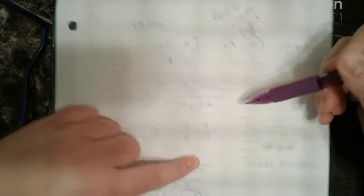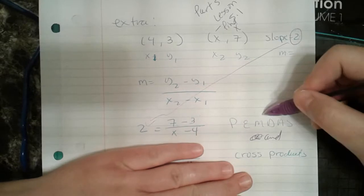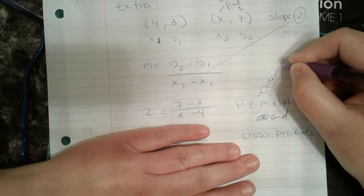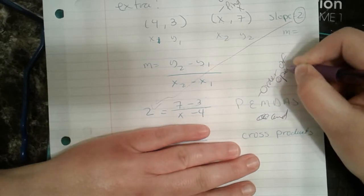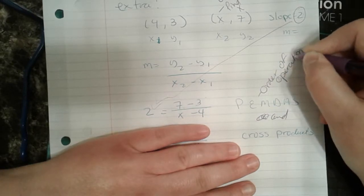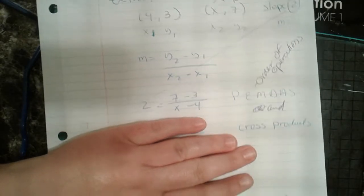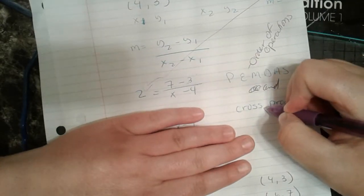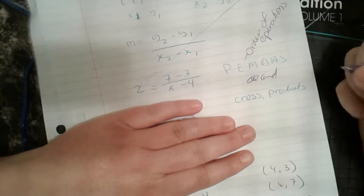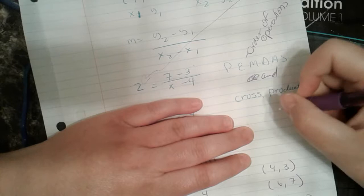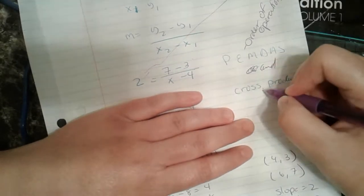Now, again, it's important to realize PEMDAS and your cross products. PEMDAS, again, is the order of operations. You guys call it PEMDAS. You guys also call it please excuse my dear Aunt Sally. And cross products. Cross products is when I have two ratios that I can solve for the value by literally taking the cross products.